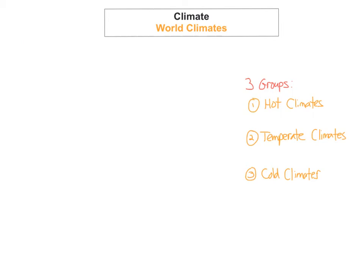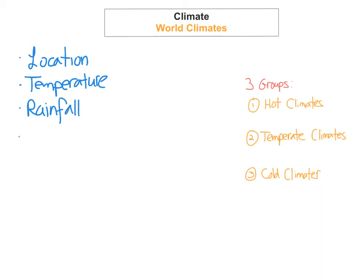You should be able to talk about the location, the temperature, and the rainfall or precipitation that climate receives. You should also be able to talk about the soil type, the flora — which is the plant life and how it has adapted to survive in that climate — and the fauna, referring to the animals and how they have adapted to survive in that climate. And the last heading is human activity and how human activity has impacted on the climate.